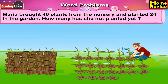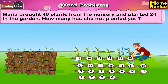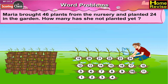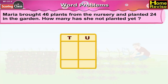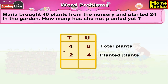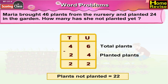Maria brought 46 plants from the nursery and planted 24 in the garden. How many has she not planted yet? Total number of plants Maria brought are 46 plants. The plants she planted are 24. The plants not planted would be total minus planted, that is 46 minus 24. Units: 6 minus 4 is 2. Tens: 4 minus 2 is 2. So, the plants not planted are 22 plants.